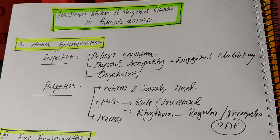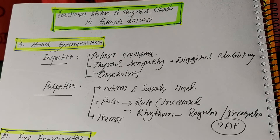There are three points: hand examination, eye examination, and leg examination. We start with the hand. On inspection of the hand, there may be palmar erythema, thyroid acropachy — that is digital clubbing — and sometimes, though unlikely, onycholysis.